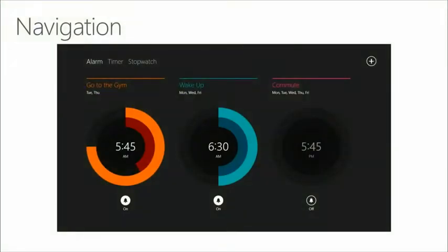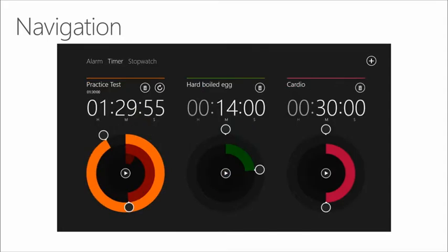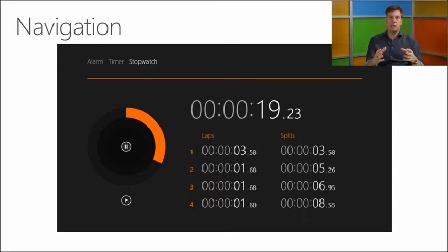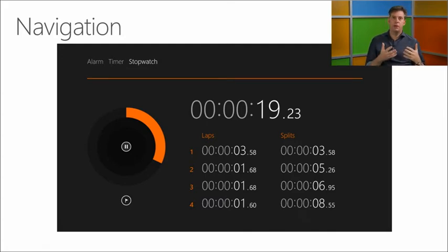When we talk about navigation, we discussed the navigation bar as a standard control you can use. But for this app, they came up with just on-screen navigation — you see the alarm, you can go to the timer tab, and you can go to the stopwatch. It's very easy to navigate, and there will never be more than three pieces to navigate between, so there's room for the navigation on screen.